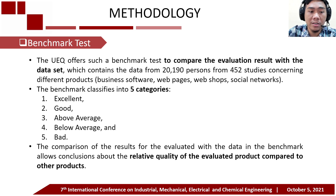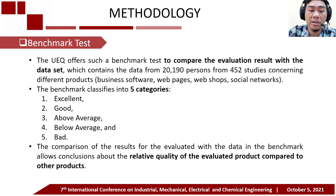The UEQ offers a benchmark test to compare the evaluation result with a dataset containing data from 20,190 responses from 452 studies concerning different products, namely business software, webpages, webshops, and social networks. The benchmark classifies results into five categories: excellent, good, above average, below average, and bad. The comparison of the result for the evaluated product in the benchmark allows conclusions about the relative quality of the evaluated product compared to other products.